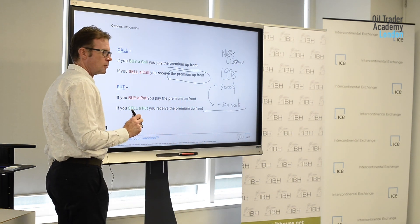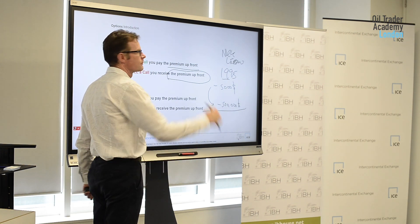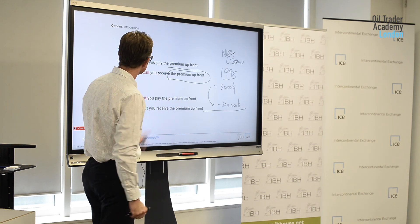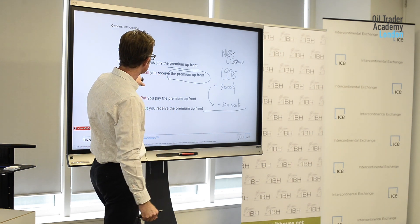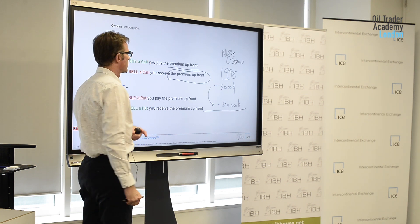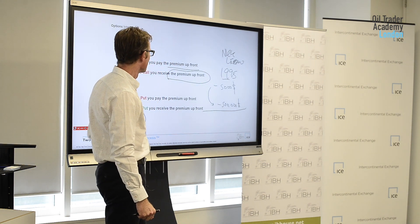And if you watch the film Rogue Trader, he's in the gym in Singapore, very frustrated, punching the punch bag. And it suddenly occurs to him, I could sell loads of options and get paid the premium up front and use that money to hide the loss.